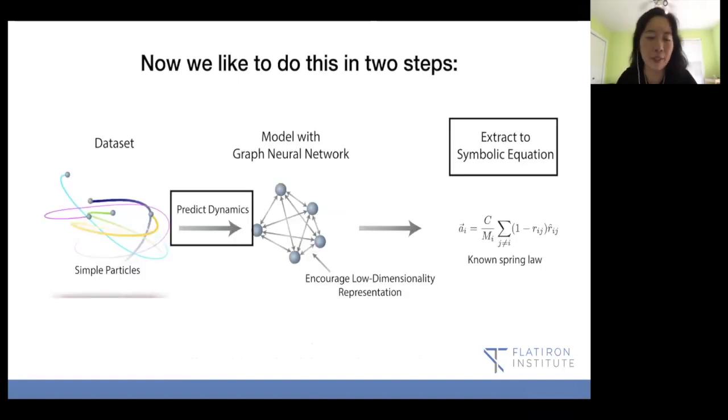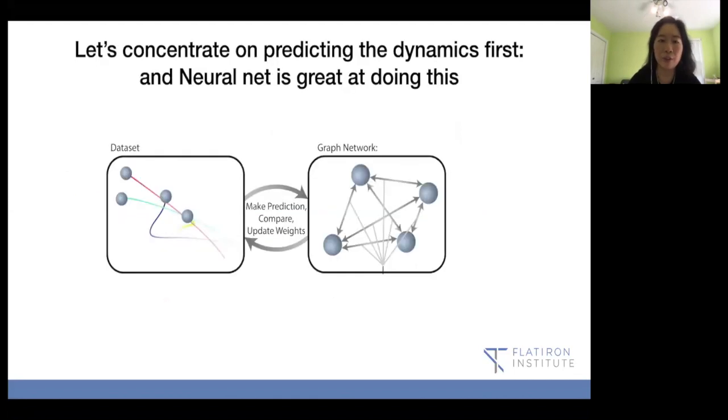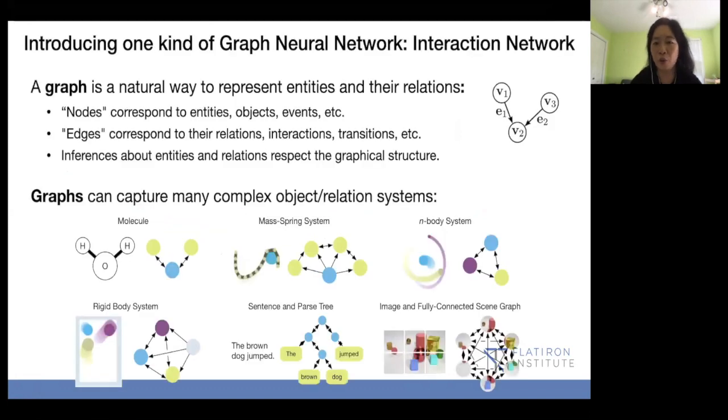So now we like to do this in two steps. The first part is just to predict the dynamics, just right here. And you model with the graph neural net. And there's a part, which is the second part, which is extract the symbolic equation, which you actually already see in the demo. The part about predicting dynamics is actually not so difficult, because it's very similar to all the convolutional that you've seen, except this time it's the graph neural net, which you already saw. But I'm going to just repeat things and put them all together. Hopefully that will make a lot more sense the second time around. We make the predictions with the neural net, we compare, we update the weights, and you do this loop again.